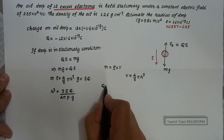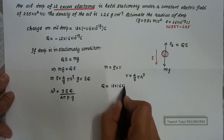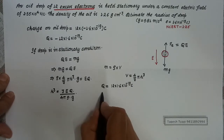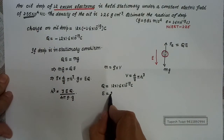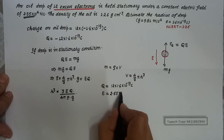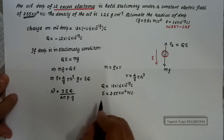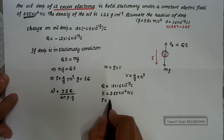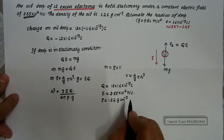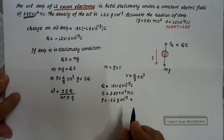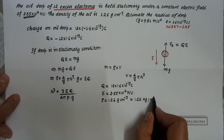The value of Q given in the question is 12 × 1.6 × 10⁻¹⁹ coulomb. The electric field given is 2.55 × 10⁴ newton per coulomb. The density given is 1.26 gram per centimeter cube, which in SI units equals 1.26 × 10³ kg per meter cube.